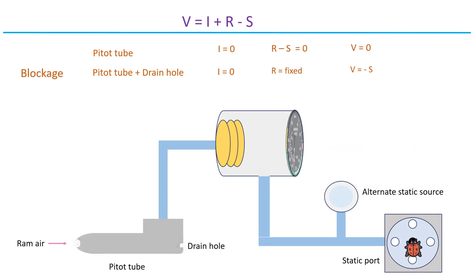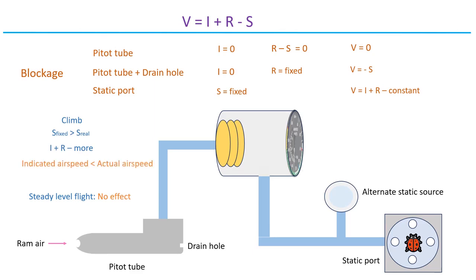If that static port gets blocked, the static pressure remains the same. When the pitot system is working normally, the airspeed indicator chugs along just fine during steady level flight. But things get wonky when you start climbing or descending. As you climb, the outside pressure drops, the trapped pressure in the system is higher than actual pressure. This results in subtracting more than it should from the dynamic pressure, making the indicated airspeed fall behind the real deal. During a descent, the environmental pressure goes up and the trapped pressure is lower than the actual static pressure, causing the indicated airspeed to read higher.